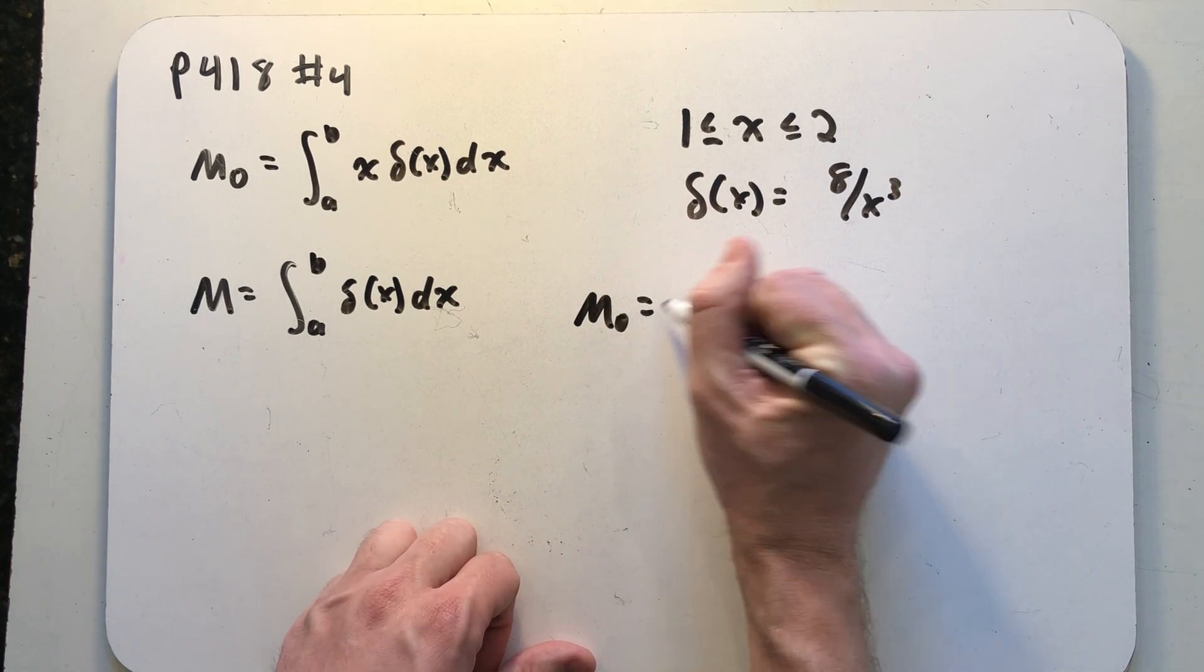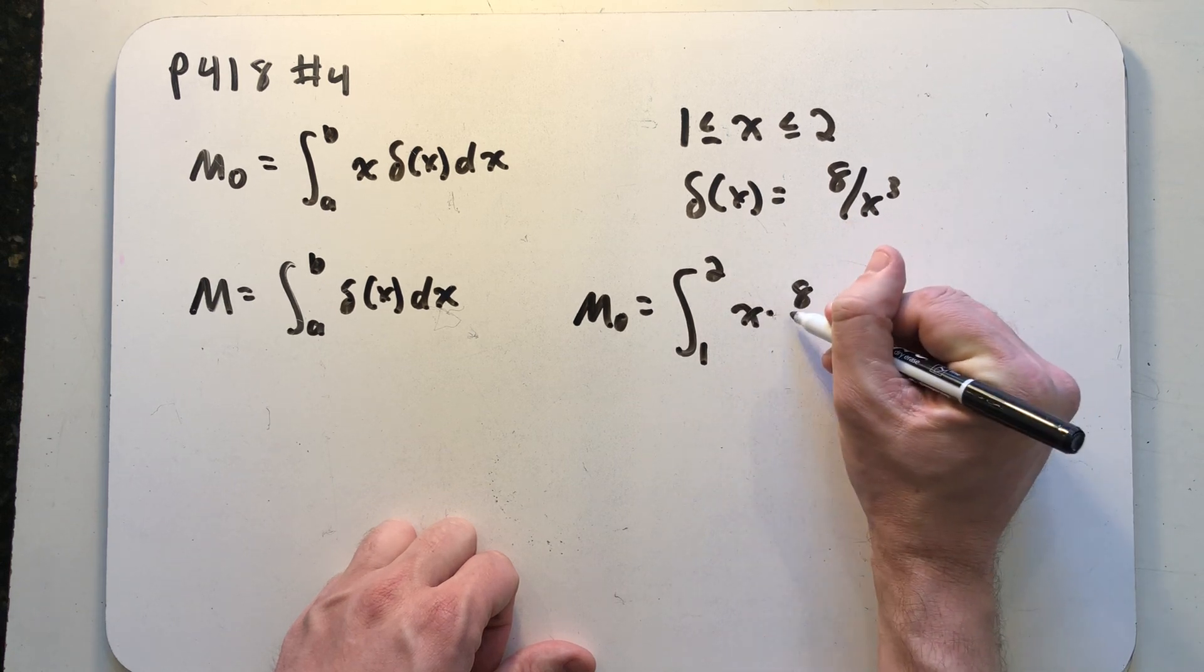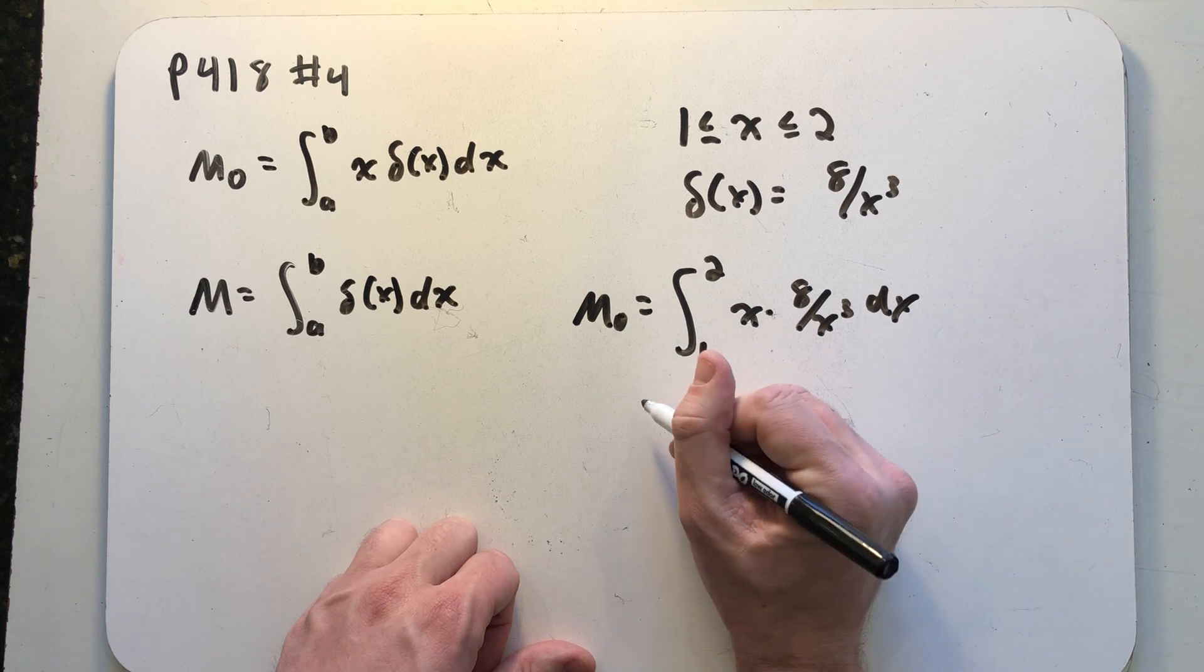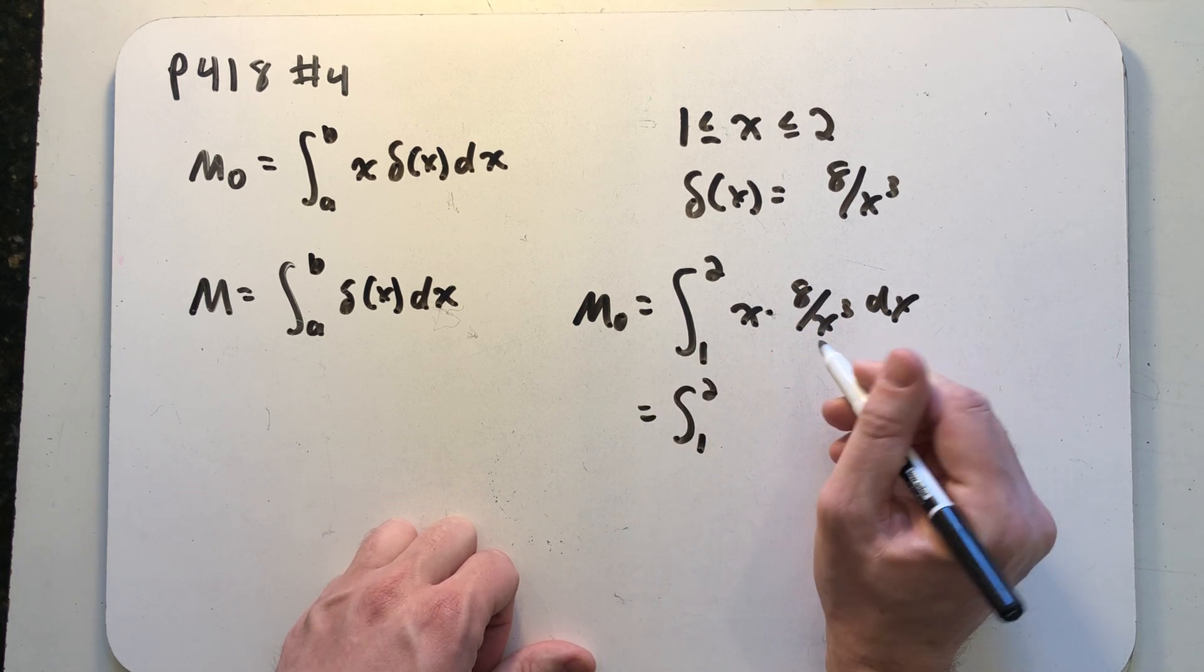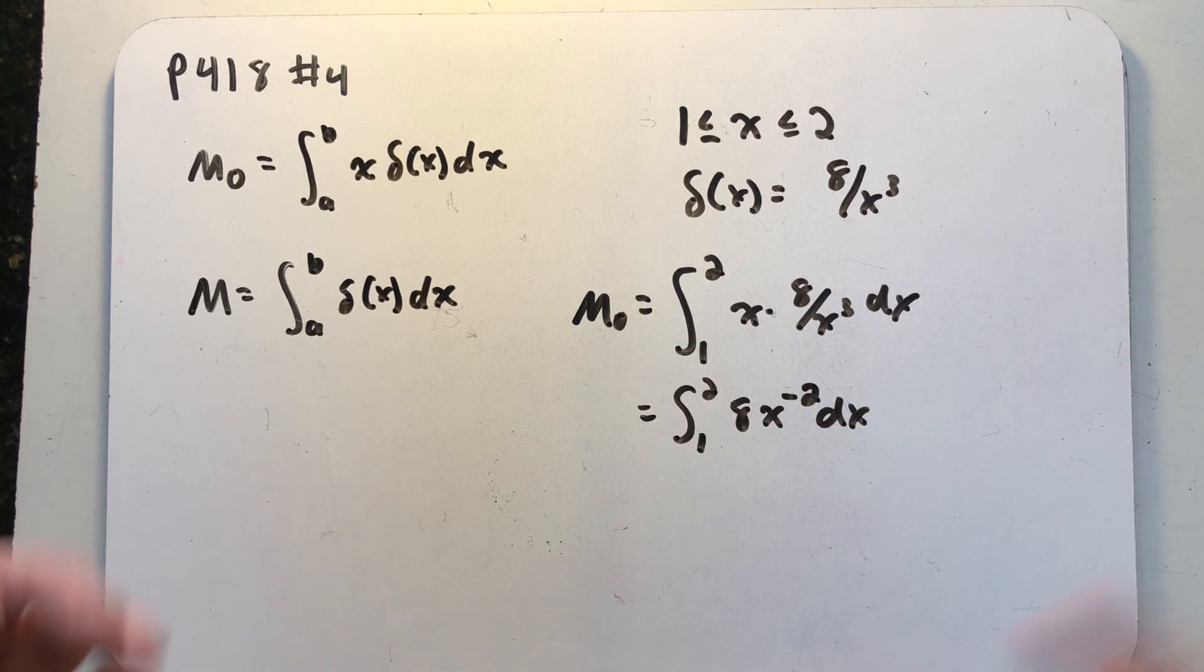So we can go on and set that one up. We'll be integrating from 1 to 2, x times the density function which simplifies nicely. That's gonna be 8 over x squared. I'm gonna go on and write that as 8 times x to the minus second.